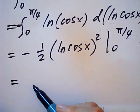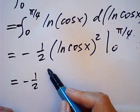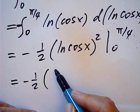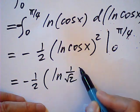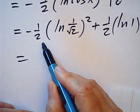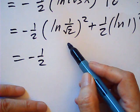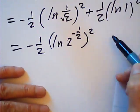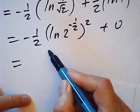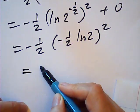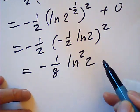Using ∫ f df = (1/2)f², this equals −(1/2) log²(cos x) evaluated from 0 to π/4. At x = π/4, cos(π/4) = 1/√2, so log(1/√2) = −(1/2)log 2. Squaring gives (1/4)log²(2). At x = 0, log(1) = 0. So the result is −(1/2)·(−(1/2)log 2)² + 0 = (1/8)log²(2) — the same answer again.